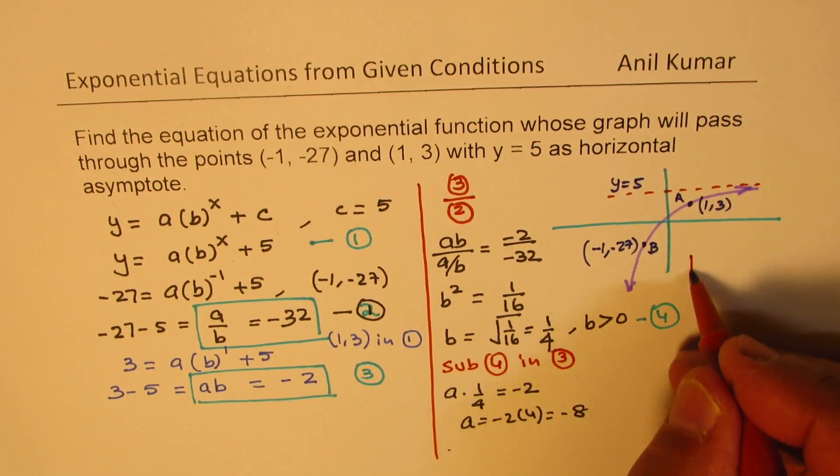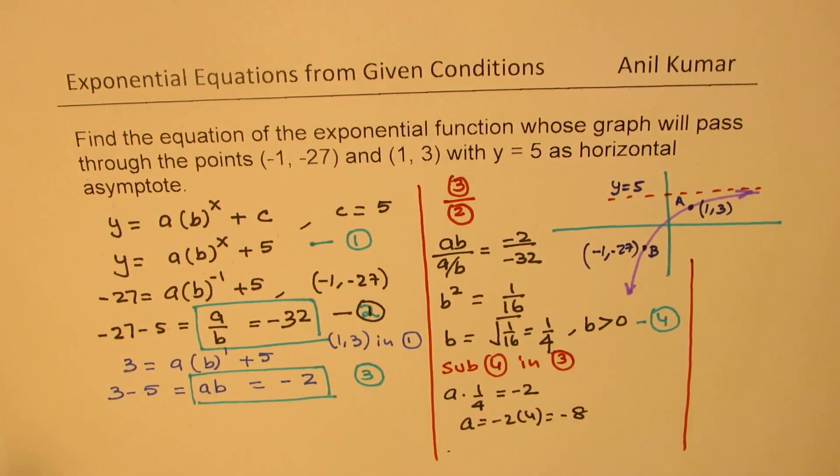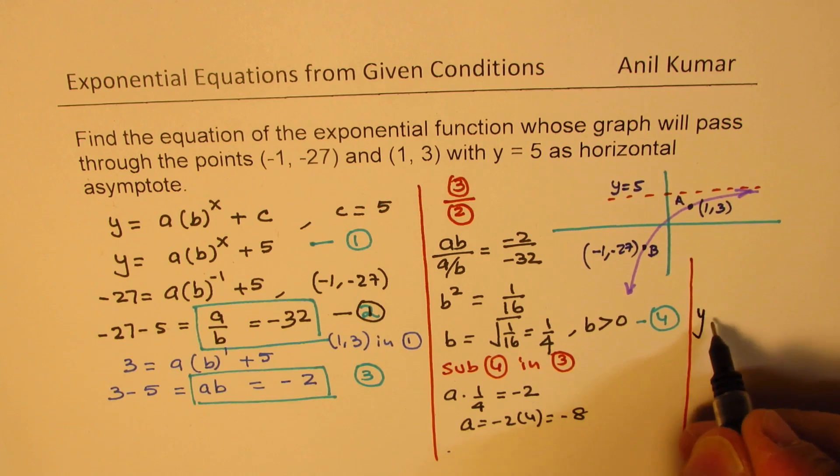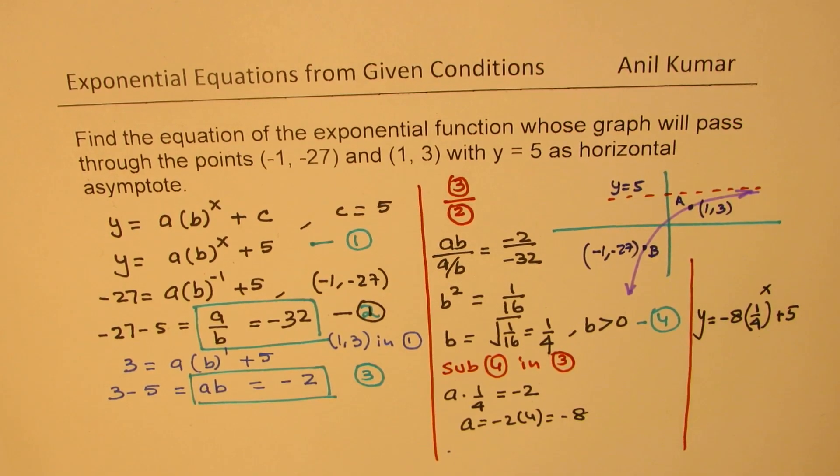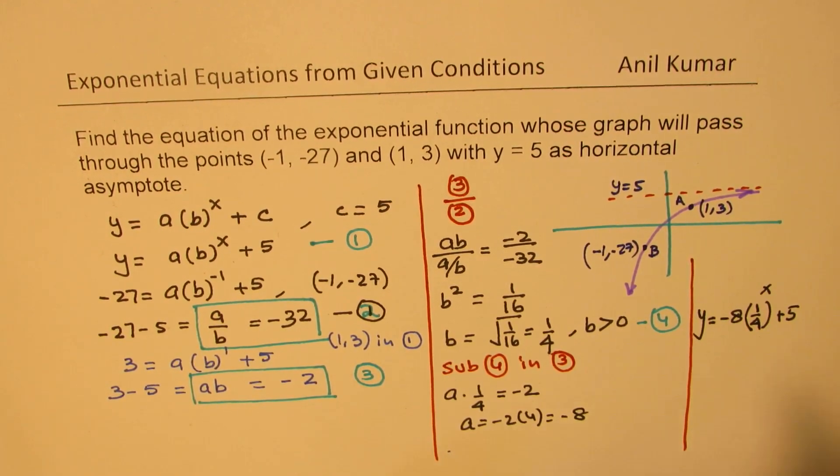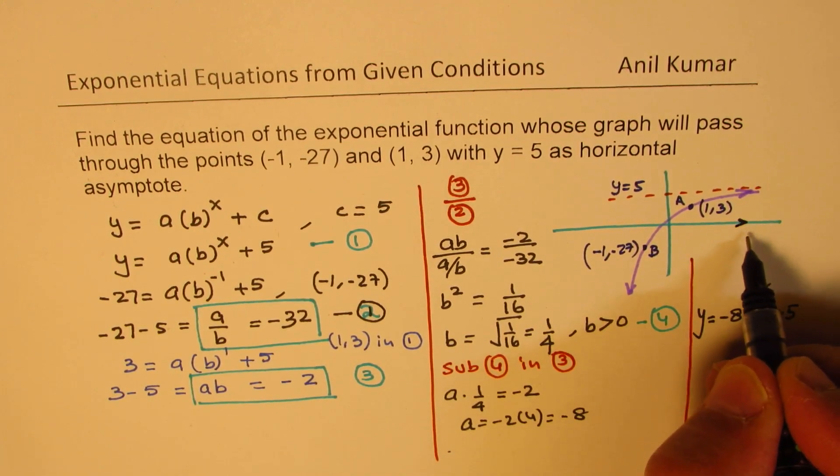That gives you the value for both a and b. Now we know that our function y should equal -8(1/4)^x + 5. Is that clear to you? That is how we can get the equation of the given function. You can actually substitute the x value of 1 and -1 and check if you're getting the right answer.